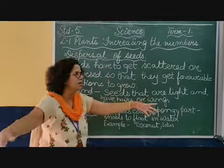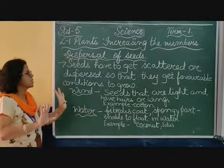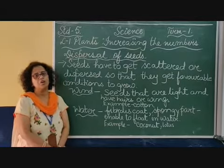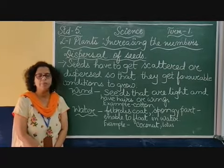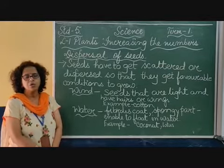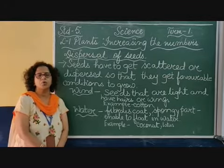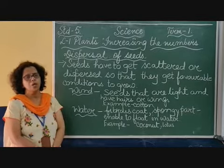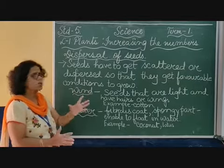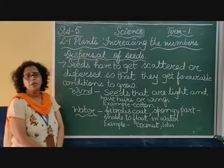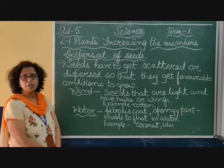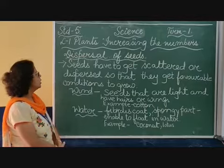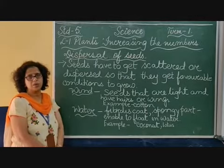Seeds have to get scattered or dispersed so that they get better conditions to grow. They need water, sunlight, and warmth. If any one of these conditions is missing, the seeds will not grow. That is why dispersal of seeds is very important.